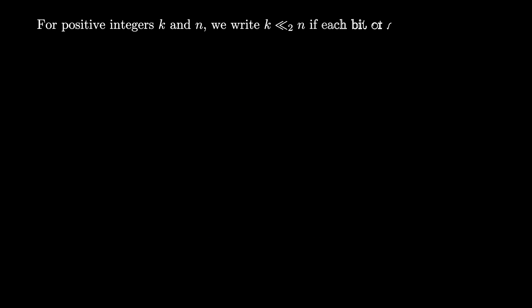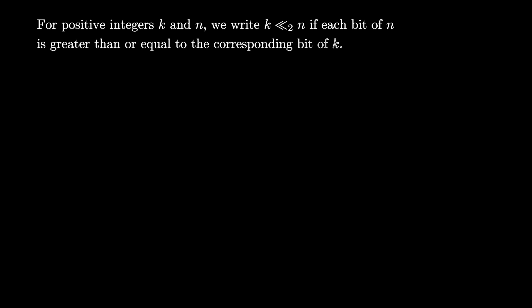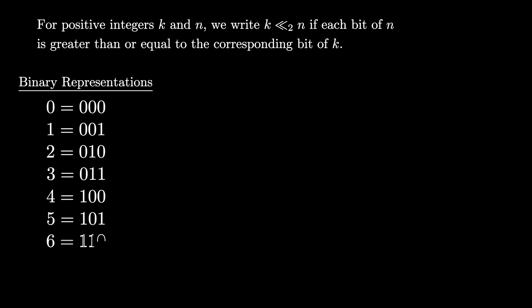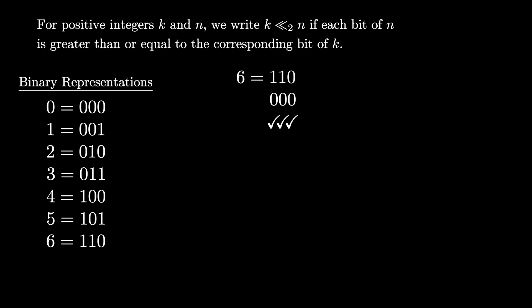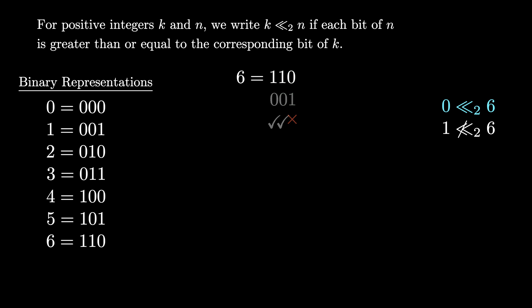Our next construction requires us to introduce a partial order on the set of positive integers. We say that k is bitwise dominated by n if each bit of n is greater than or equal to the corresponding bit of k. For example, here are all the binary representations for the integers from 0 to 6, padded with zeros so all representations are the same length. Let's check if 0 is bitwise dominated by 6 — indeed each bit of 6 is greater than or equal to the corresponding bit of 0, so 0 is bitwise dominated by 6. But for 1, the very last bit, 0, is not greater than or equal to 1, so 1 is not bitwise dominated by 6.